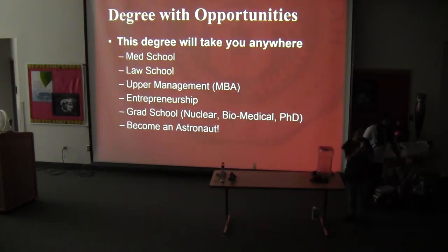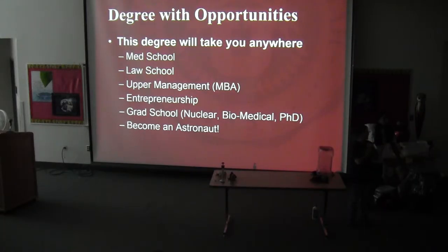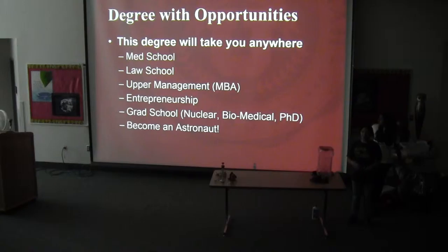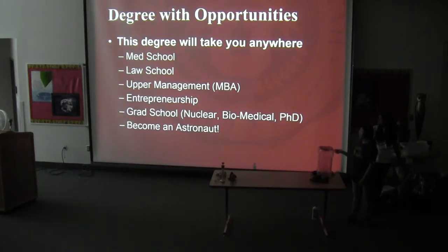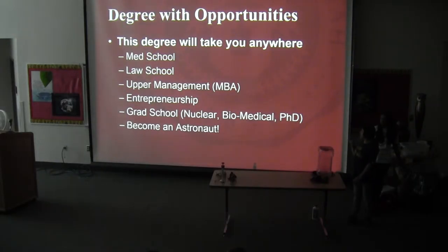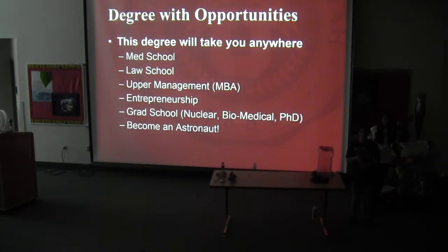Chemical engineering is a four-year degree, and afterwards if you want to keep doing something else - it's great if you want to go to med school or law school, or if you want to do management. A lot of chemical engineers end up in management, not just in the lab. Or maybe you come up with your own idea and want to start your own business. If you want to go to grad school, you don't have to go for the same thing as your undergrad - you could go into nuclear, biomedical, all different types. And you can become an astronaut - the first African-American female who went to outer space was a chemical engineer.